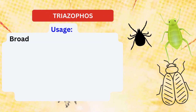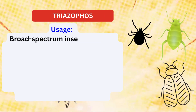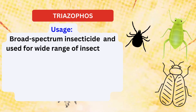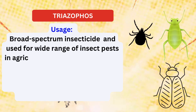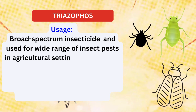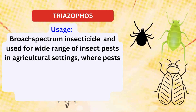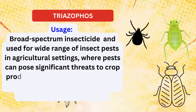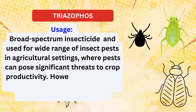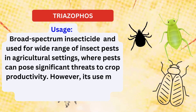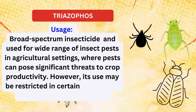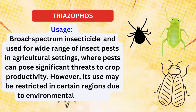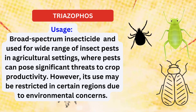Uses. Triazophose is widely used as an organophosphate insecticide to control a broad spectrum of insect pests in agricultural settings. It is effective against pests such as aphids, thrips, caterpillars, and beetles in crops like cotton, rice, vegetables, and fruits.